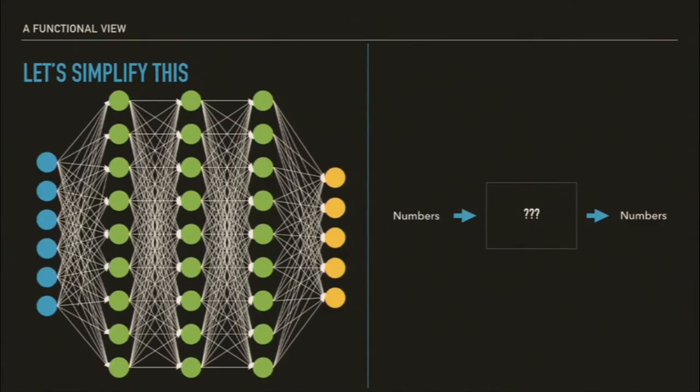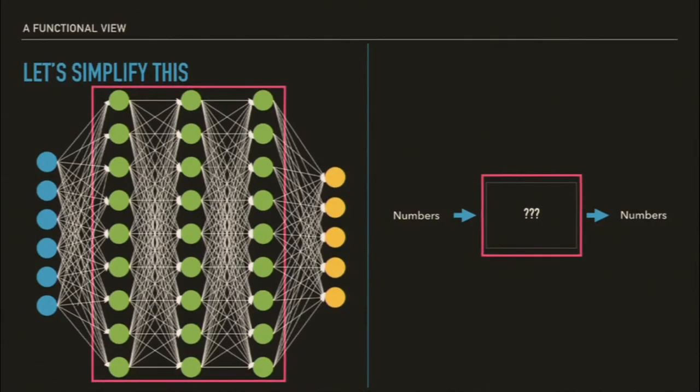So let's simplify this diagram. What we have is: numbers come in, then math happens — question mark, question mark, question mark — because who knows, they're just math equations. And then those math equations produce numbers out.